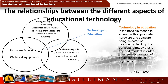These three areas merge together, and where they overlap, that is where technology in education comes in. Technology in education is a possible means to an end, with appropriate hardware and software being selected or designed to back up the particular strategy decided upon in order to achieve a given set of educational aims or objectives. When we decide to use particular software, hardware, and inject strategies into our teaching and learning environment, that is how these different elements of educational technology help instill better learning in students in the classroom.